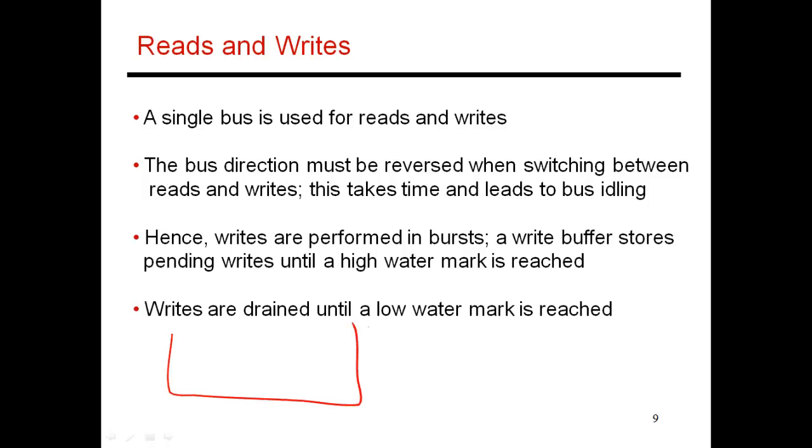We previously talked about how on the processor chip, when you have a miss in your last level cache, that request shows up at the memory controller. The memory controller has to handle both reads and writes. There's usually a separate queue for reads and a separate queue for writes.